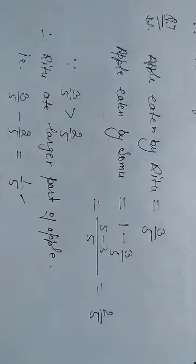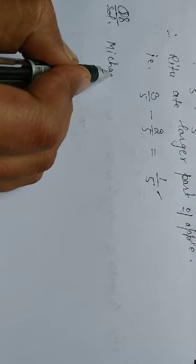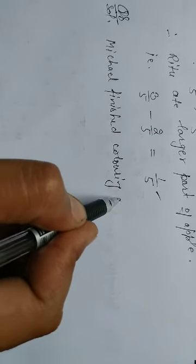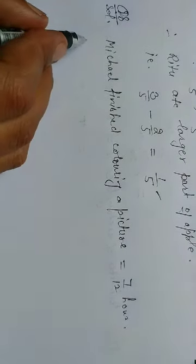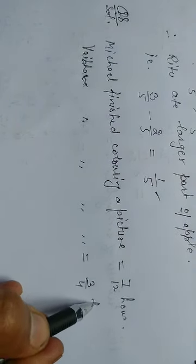Next is question number 8. Michael finished coloring a picture in 7/12 hours. Beva finished coloring the same picture in 3/4 hours. Who worked longer? By what fraction was it longer? Solution: we need to determine who worked longer and by how much. Michael finished coloring a picture in 7/12 hour, and Beva finished coloring a picture in 3/4 hour.